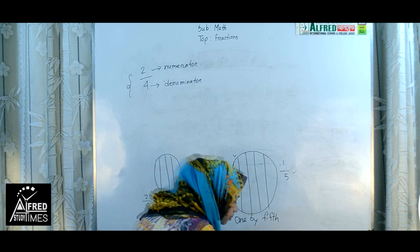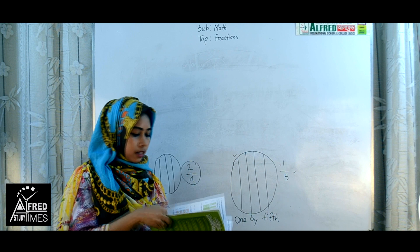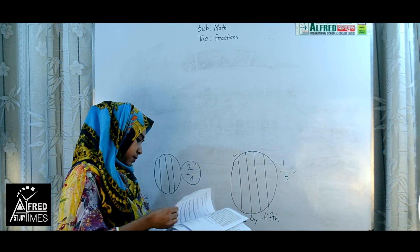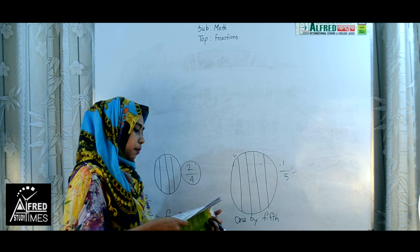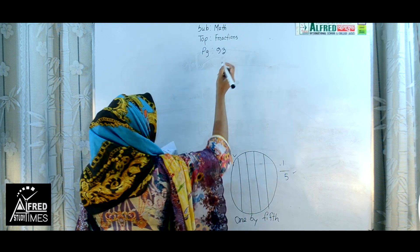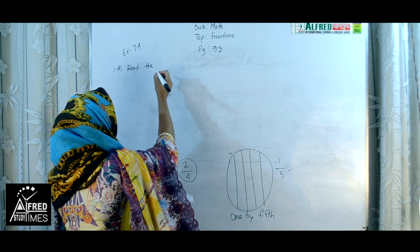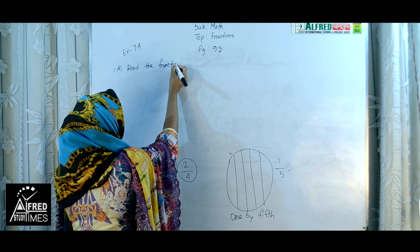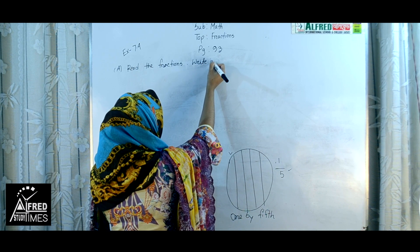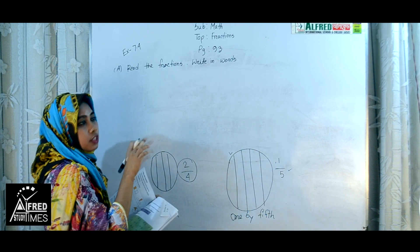So we are now doing exercise from our book. You have to take out your book, Success Math Ahead, page number 93. Exercise 7.4, number A — read the fraction and write in words.